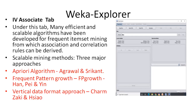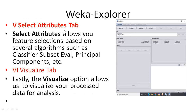In the Associate tab, you have different scalable algorithms — the Apriori algorithm, Frequent Pattern Growth (FP-growth) algorithm, and a vertical data format approach. The main intention of this tab is frequent itemset mining, from which association and correlation rules can be derived.